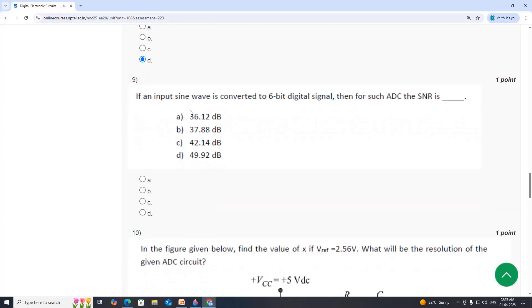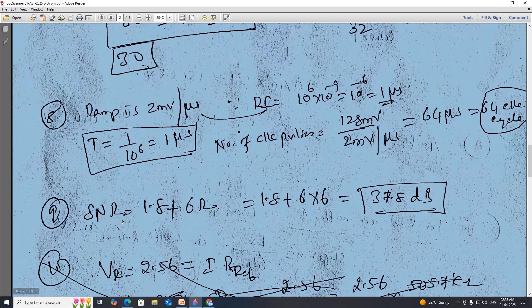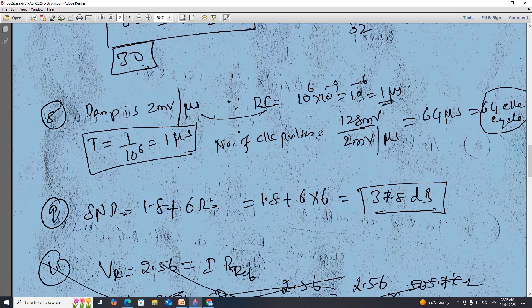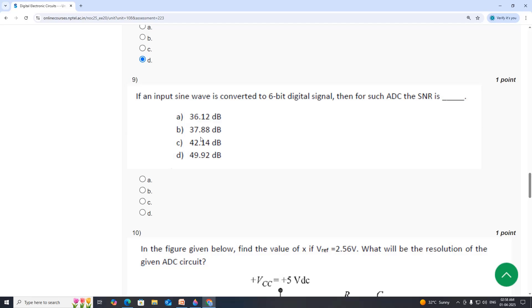Next, the input signal is converted to 6 bit digital. Then ADC is, you can see SNR equal to 1.8 plus 6R. So R equal to 6. So 37.8 dB. Option B.